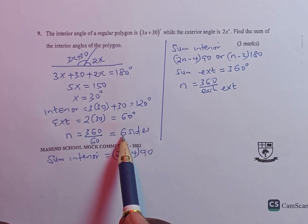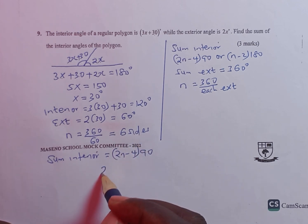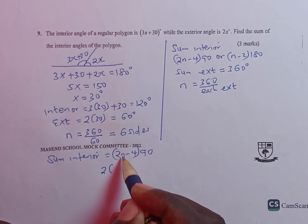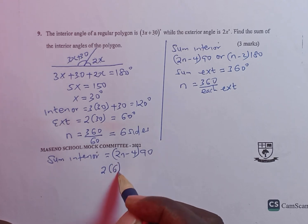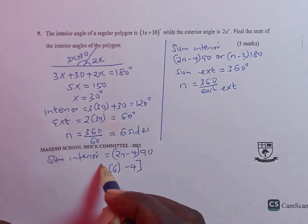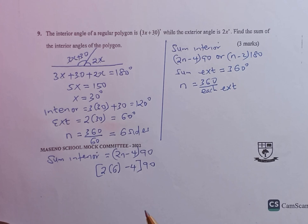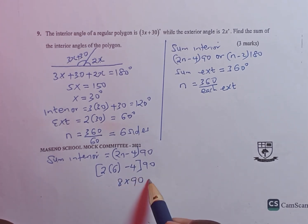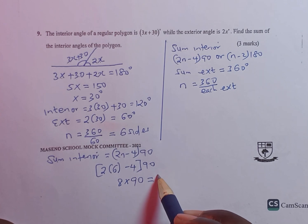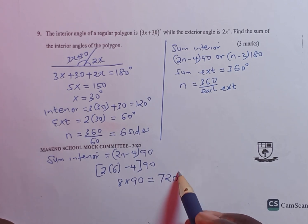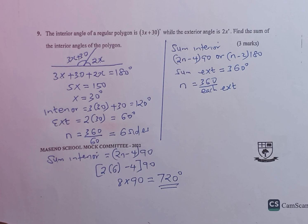We already know our n is 6, so we have 2 multiplied by 6 minus 4, everything multiplied by 90. 2 times 6 is 12, minus 4 you get 8. 8 multiplied by 90 gives us a sum equivalent to 720 degrees as the answer to this particular question.